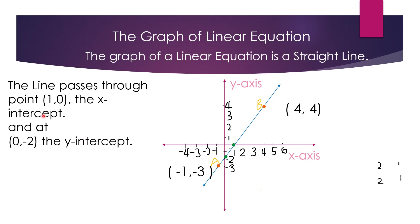Now, the line passes through point 1, 0 also, and that is the x-intercept. So here, the graph passes through the x-axis at 1, 0. This is called the x-intercept, and it also passes through the y-intercept at 0, negative 2. This is the y-intercept. The x-intercept is where the graph passes through the x-axis, and the y-intercept is where it passes through the y-axis.